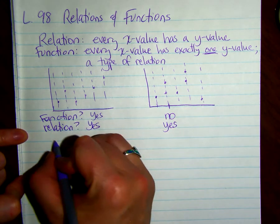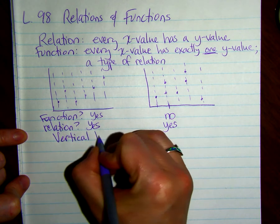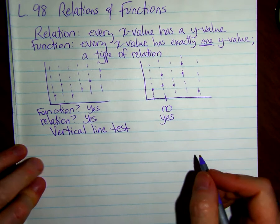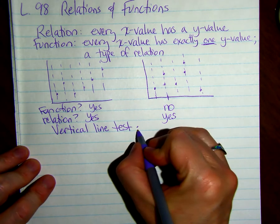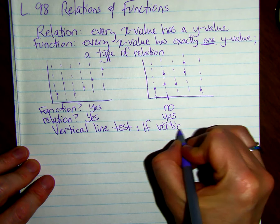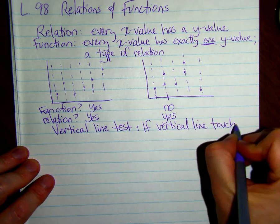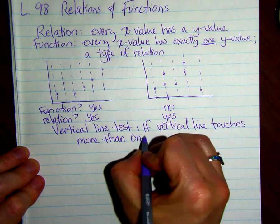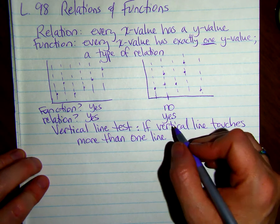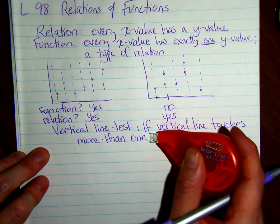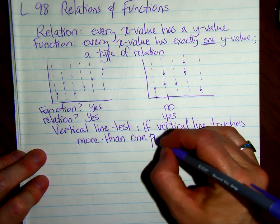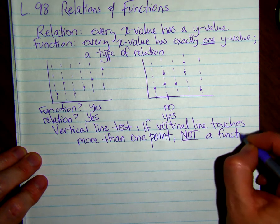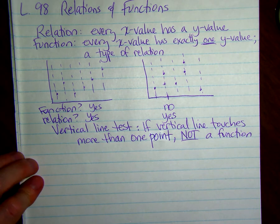So what we did here, this is called the vertical line test. That just says if a vertical line touches more than one point on your graph, then it is not a function. If it goes through just one point, then you're okay.